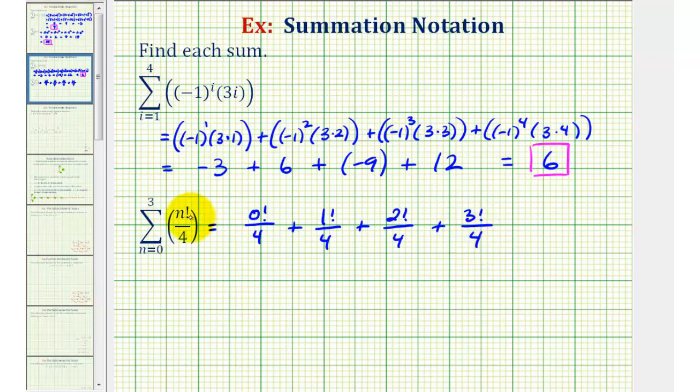By definition, zero factorial is equal to one, so we have one fourth, plus one factorial is also equal to one, so that'd be one fourth. Two factorial is equal to two times one, so this would be two fourths.